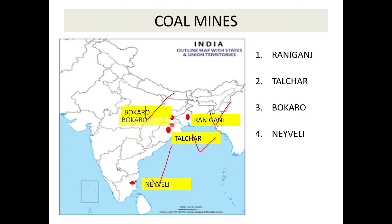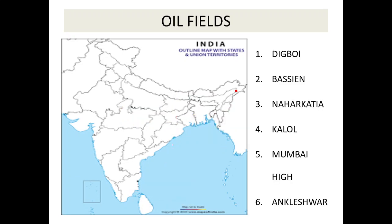Oil fields — the places from where oil is extracted. India's almost 80-90% oil — petrol, diesel — we buy from outside. That is a big reason why the Indian rupee is weak against the dollar; most dollars are spent just on oil. That is why we say save fuel. First oil field: Digboi — in Assam. It is the oldest oil well in India.